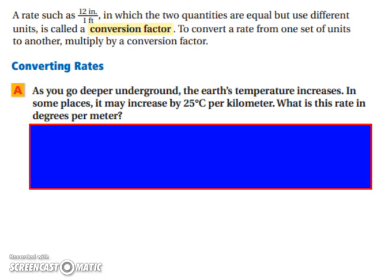A rate such as 12 inches for 1 foot, in which two quantities are equal — you know there are 12 inches in 1 foot, so the top and bottom represent the same thing but use different units. When they use different units but represent the same quantity, it's called a conversion factor. To convert a rate from one set of units to another, you multiply by a conversion factor.